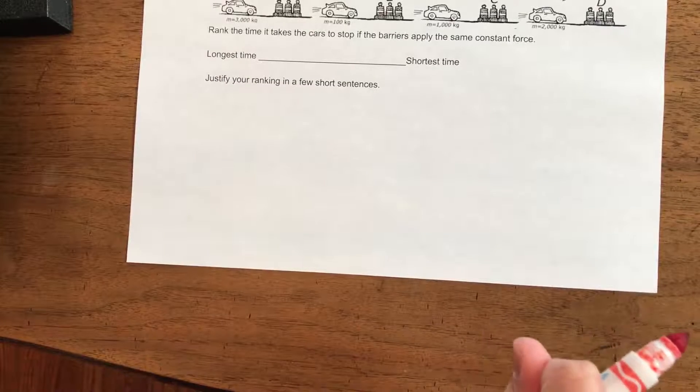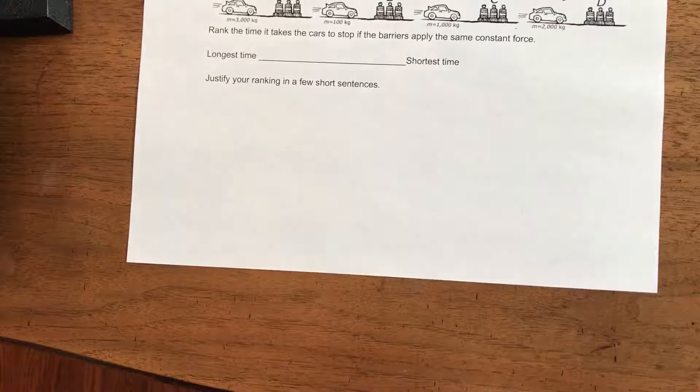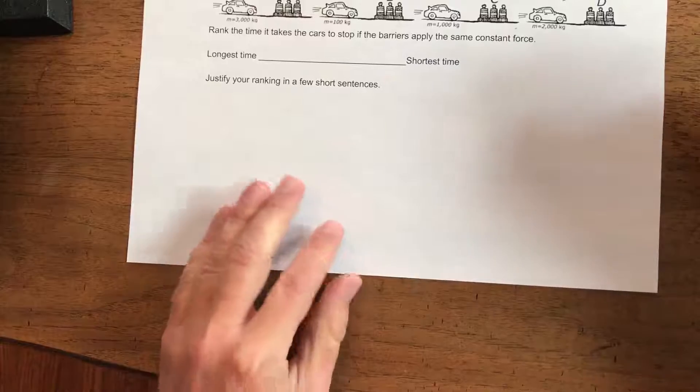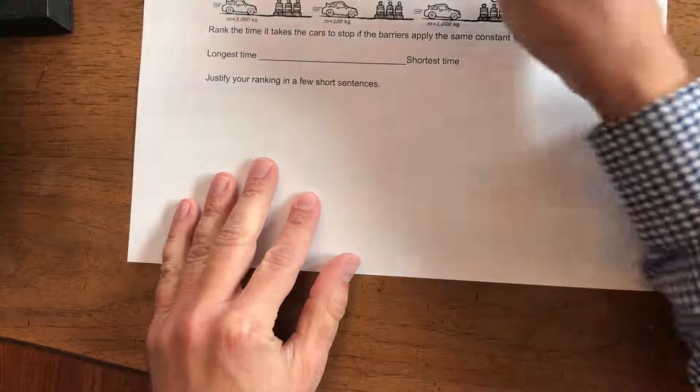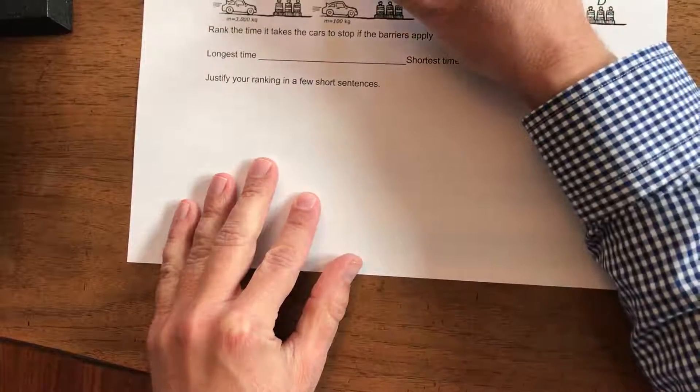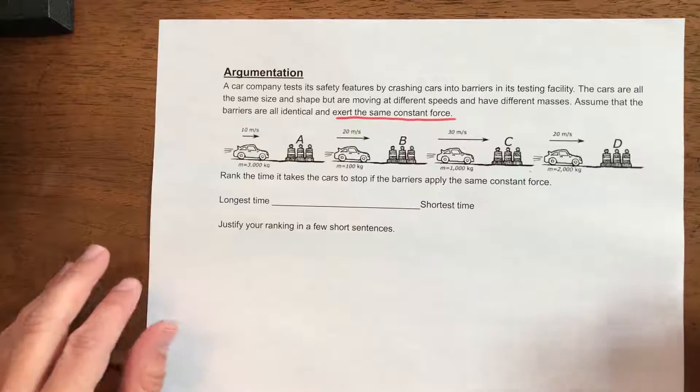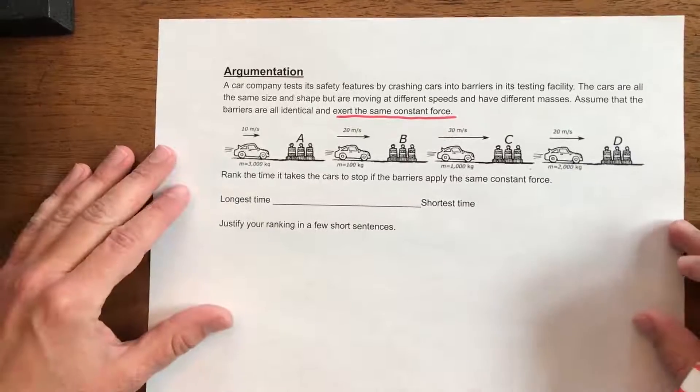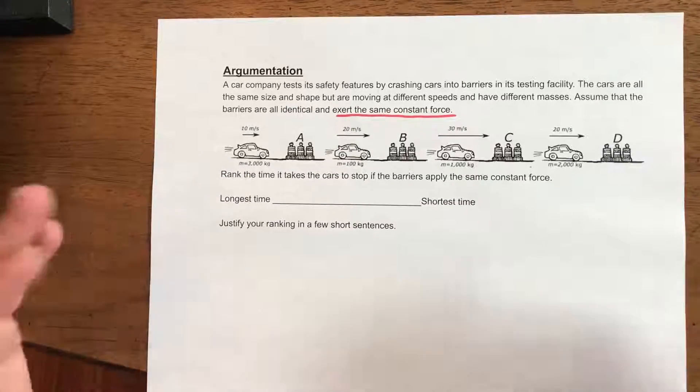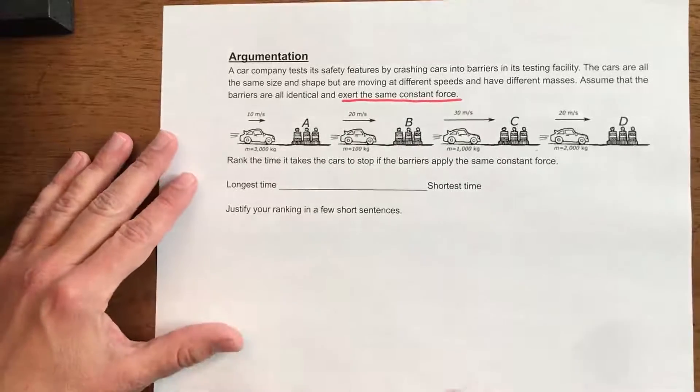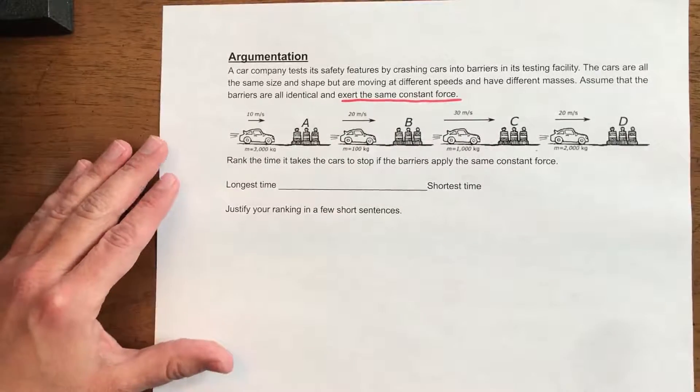So here we have a bunch of cars testing out safety and they run them into this barrier. An important thing here is it says assume that the barriers all are identical and exert the same constant force. So the same constant force on the cars there. We need to look at how much momentum each one has. That's simple, it's mass times velocity.